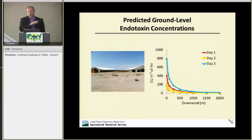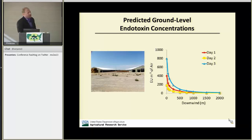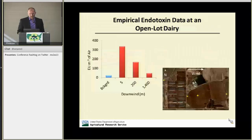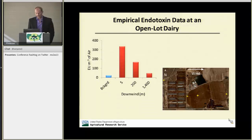Using that data, I calculated emission factors and put them into an area source dispersion model, calculating the downwind concentration. Generally, from about 500 to 2,000 meters away from the dairy, concentrations start dropping to background levels. The data from that model matches very well with the empirical endotoxin data I collected at another open lot dairy, showing that concentrations drop off with distance from the facility.